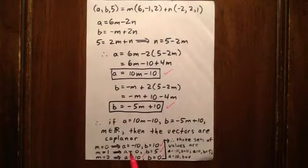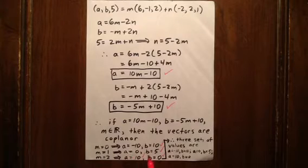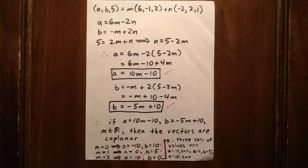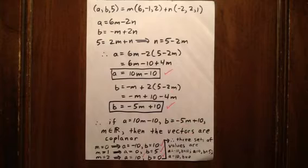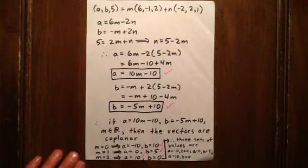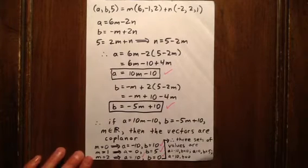So three possible pairings are: A is negative 10 and B is 10; A is 0 and B is 5; and A is 10 and B is 0. If you didn't know this parametric method, you could still do this question by using a table of values approach.